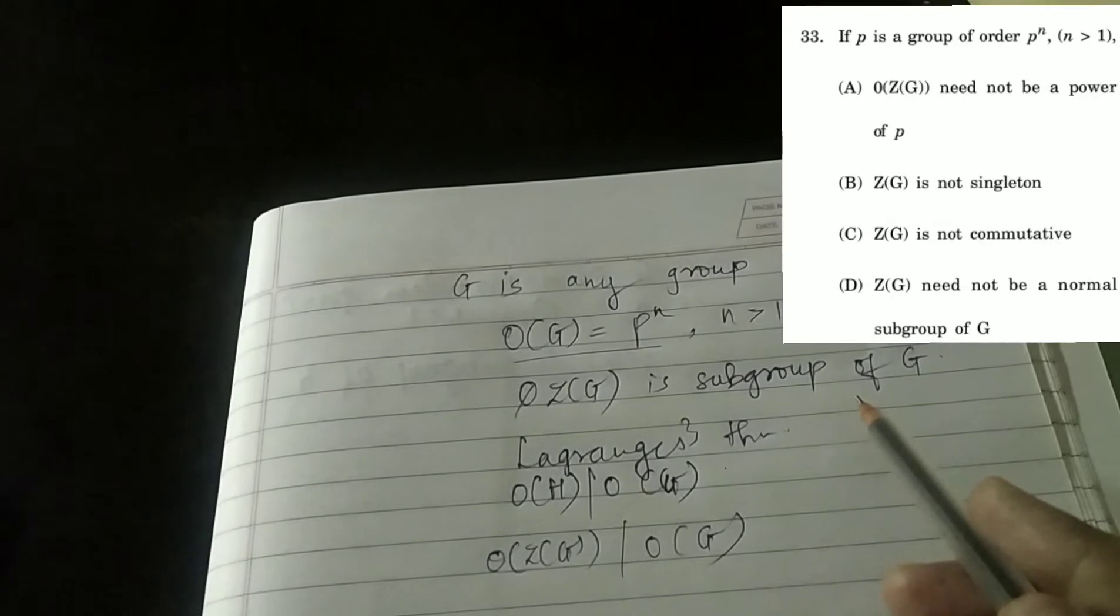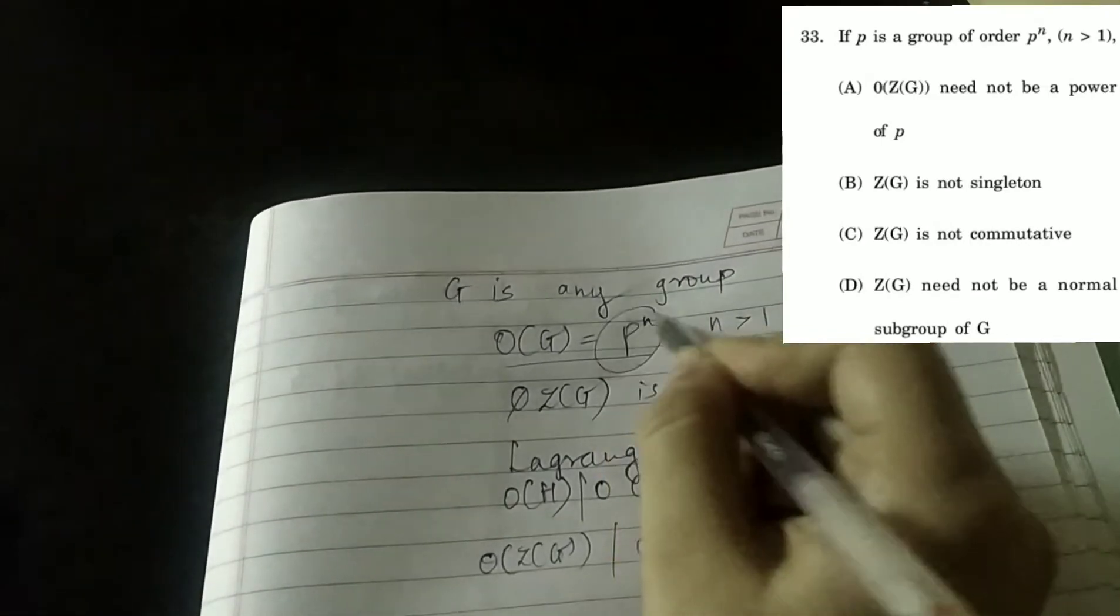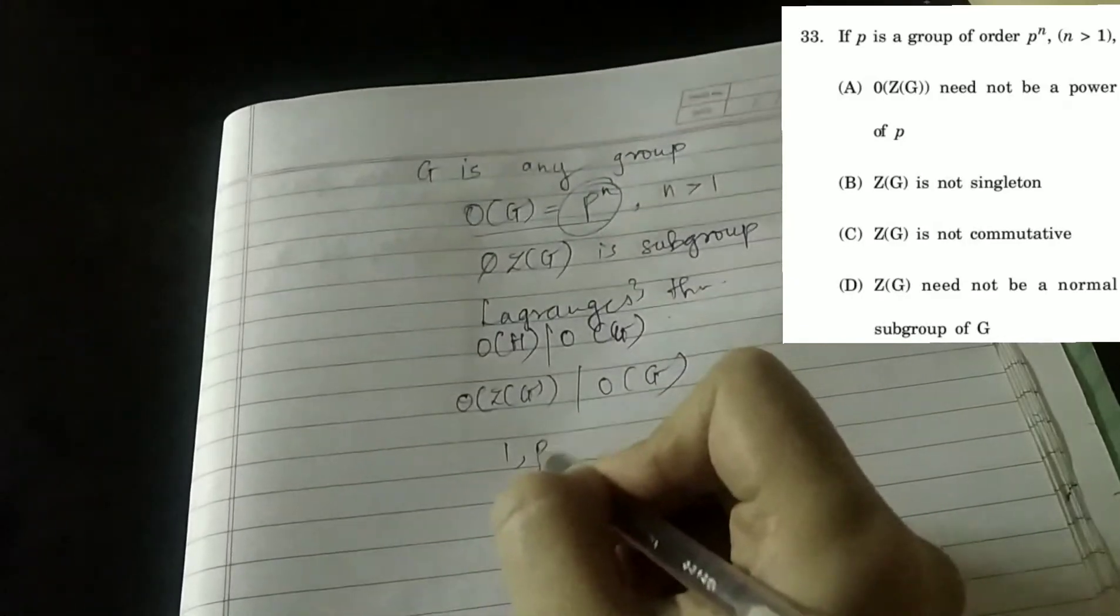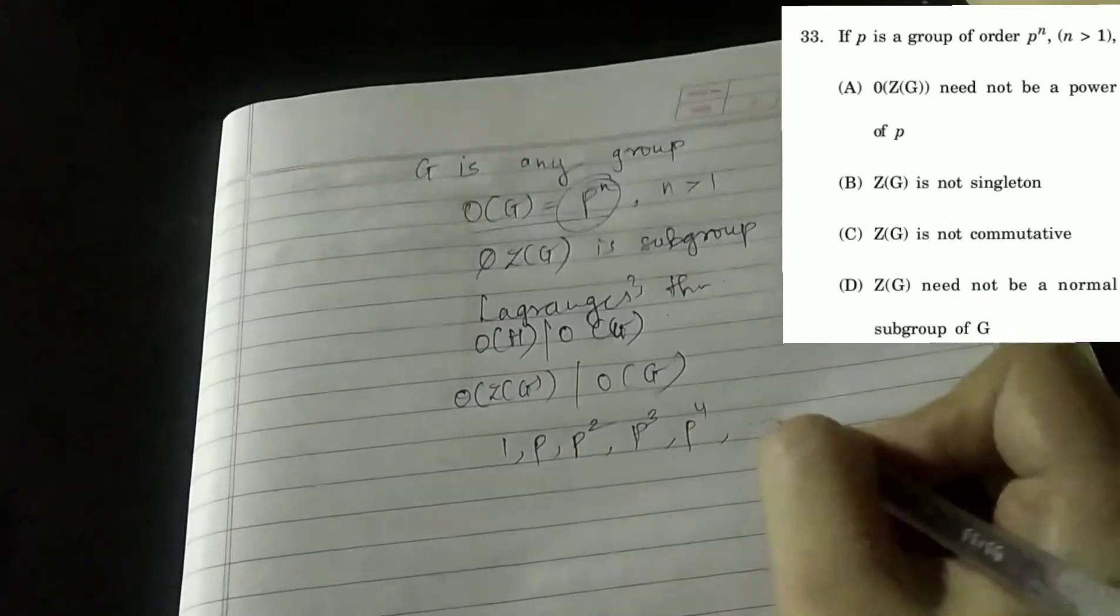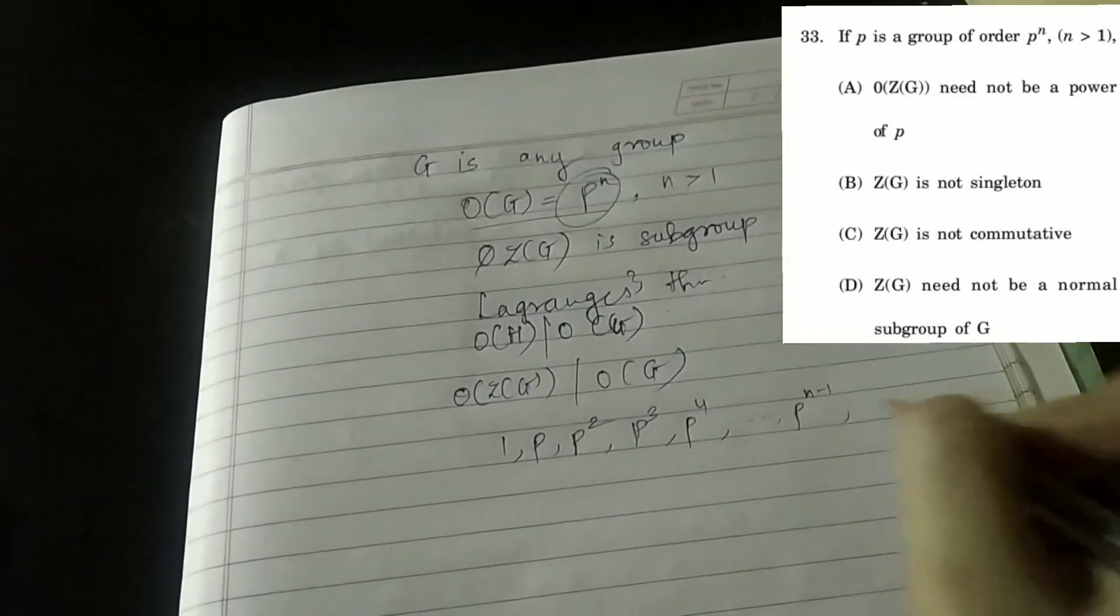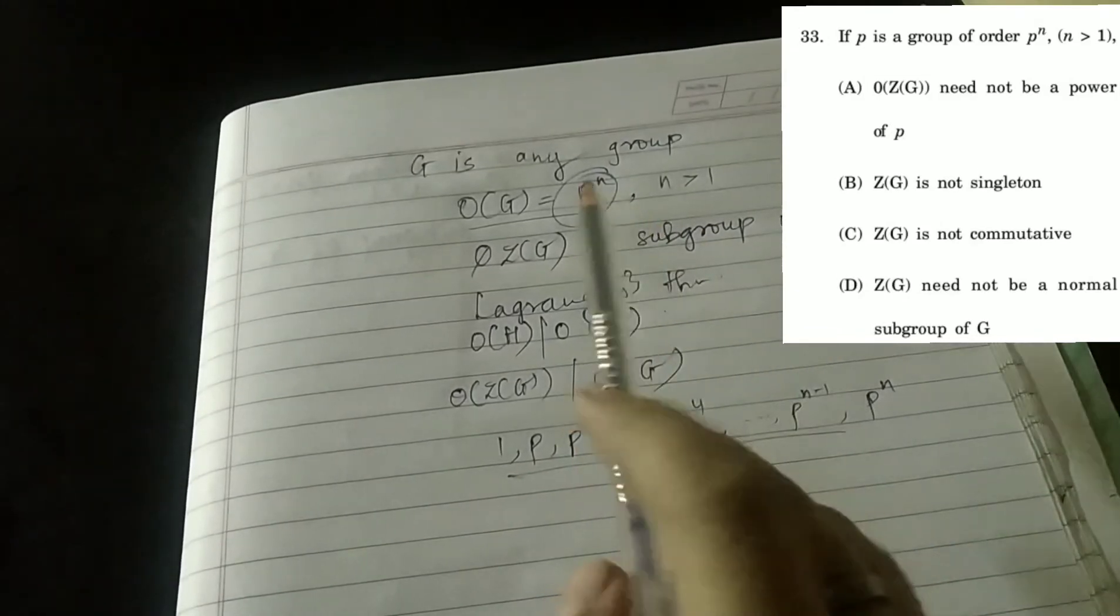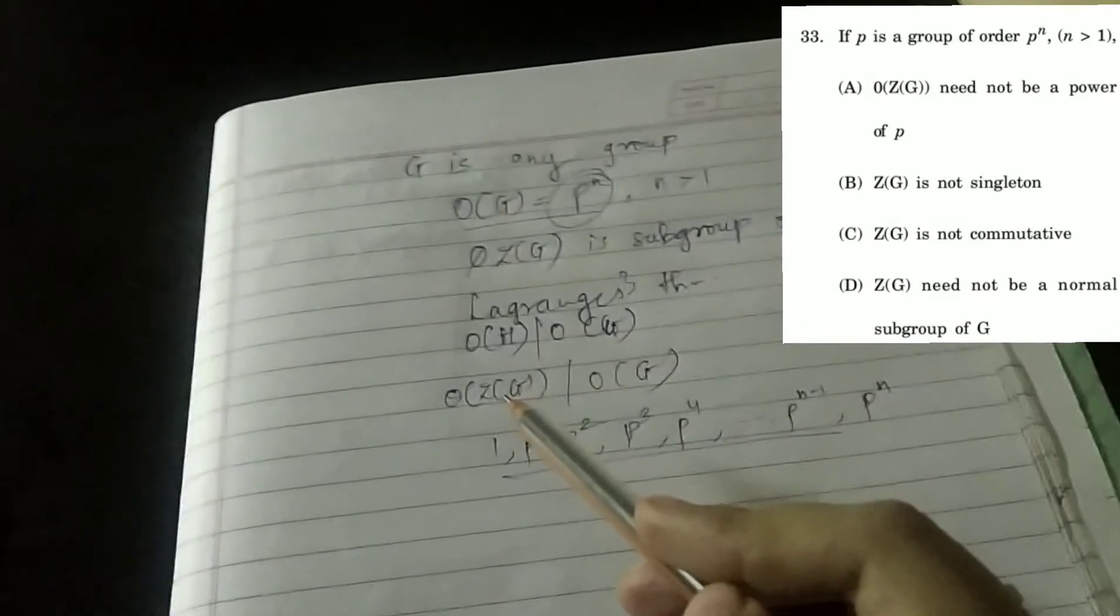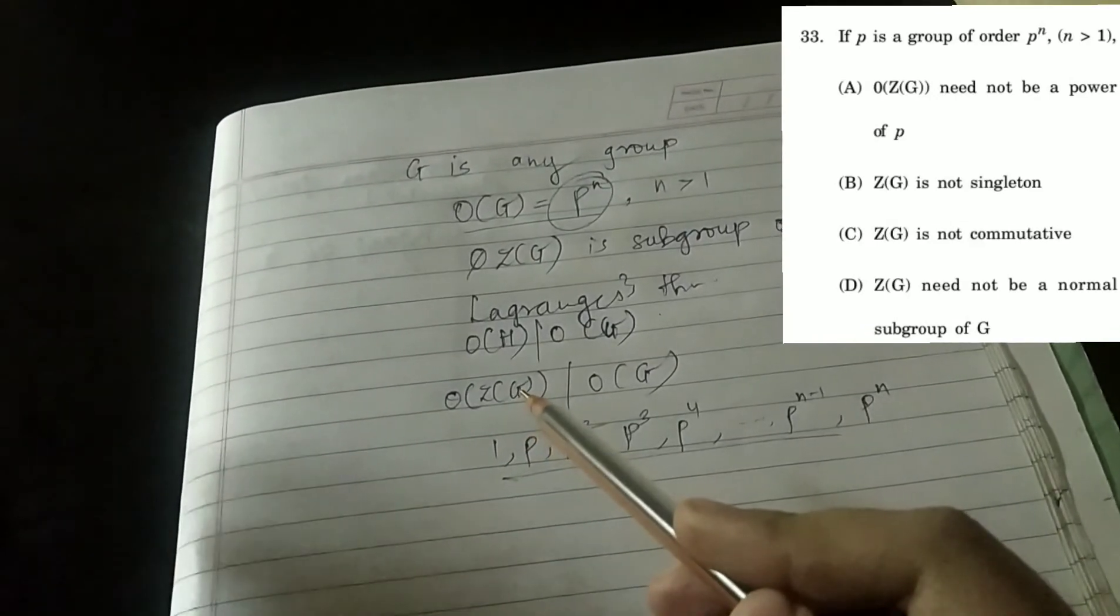Our option one is order of Z(G) need not be power of p. So guys see, divisors of this p^n can be 1, p, p square, p cubed, p raised to 4 till p raised to n minus 1 and p^n. These are all possible divisors of p raised to n. So order of Z(G) has to be power of prime, nothing else. So our option A is wrong.